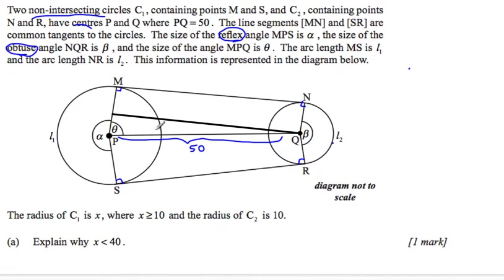This line here comes into play for the next part, so it's not in the question, but we'll talk about that in a second. The radius of C1 is x, so this whole length here is x, where x is greater than or equal to 10. The radius of C2 is 10, so this length from Q to R is 10.